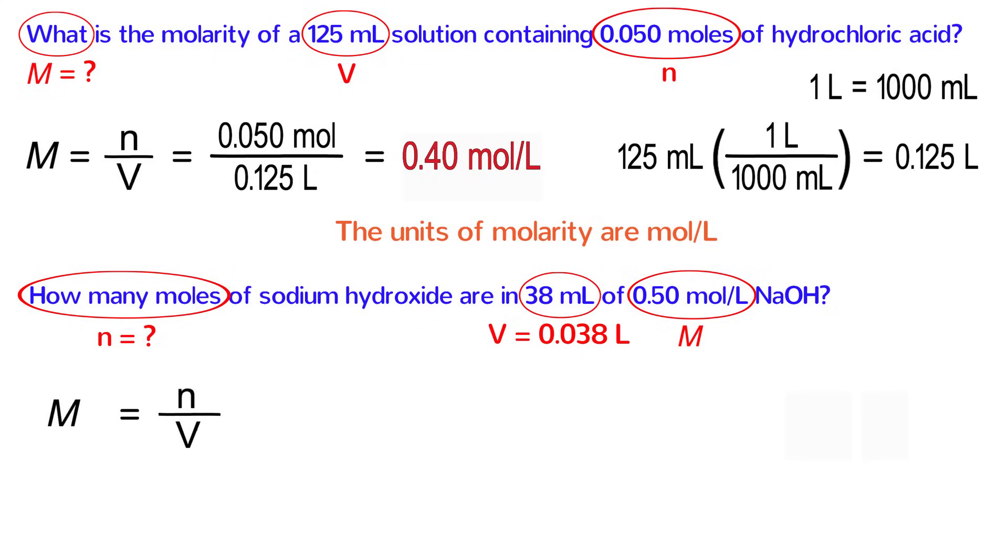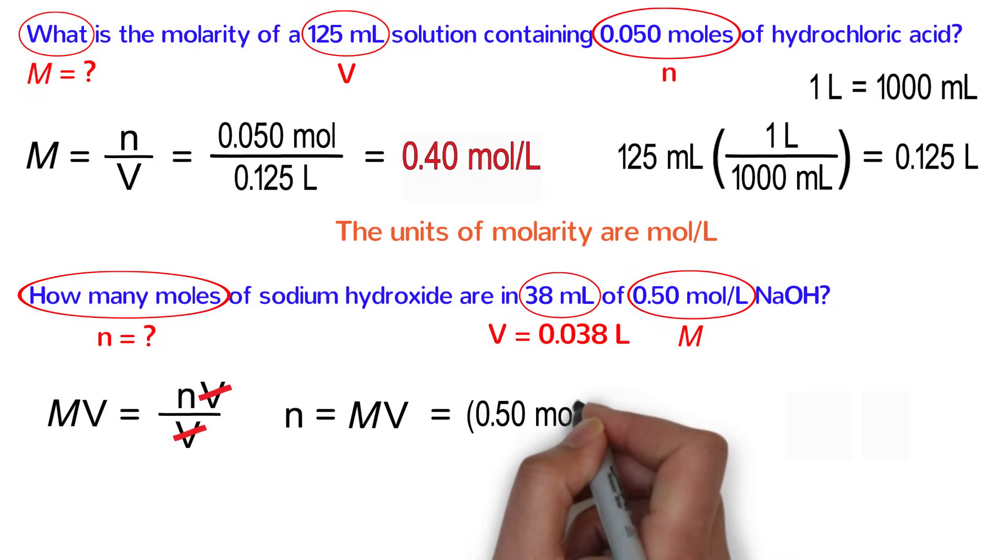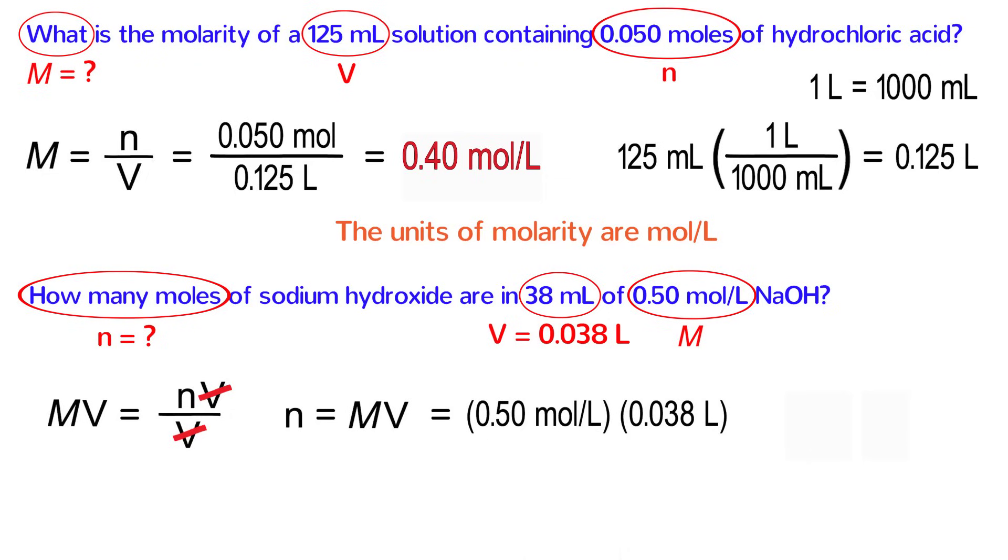M equals N over V. Because we are solving for N, we multiply both sides of the equation by V. On the right side, V over V cancels out, leaving N all by itself. We can rewrite the equation as N equals M times V. Plug in the values for M and V, remembering that V has to be in liters. 0.5 moles per liter times 0.038 liters equals 0.019. As for the units, liters on the top and bottom cancel, and the answer has the units of moles.